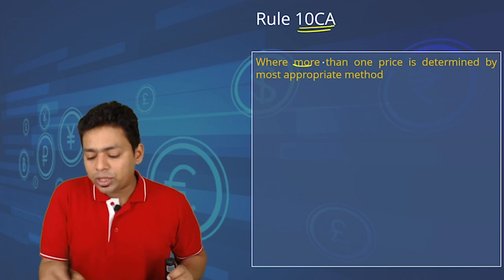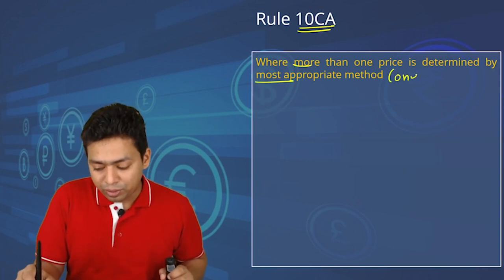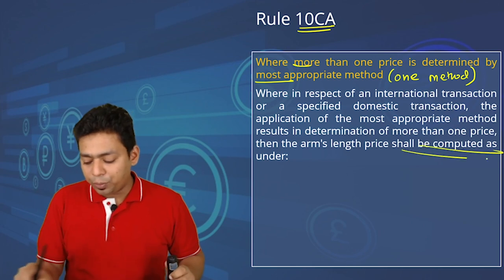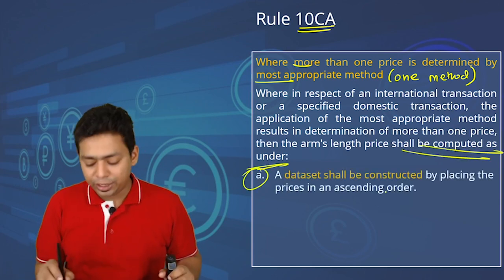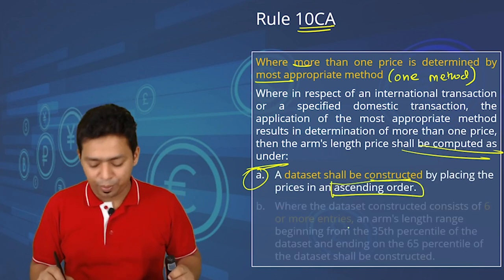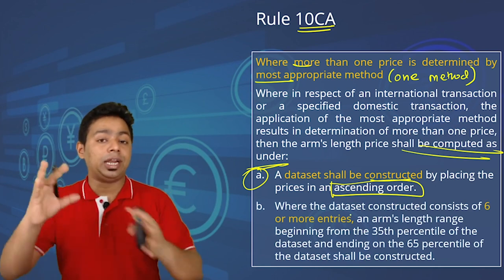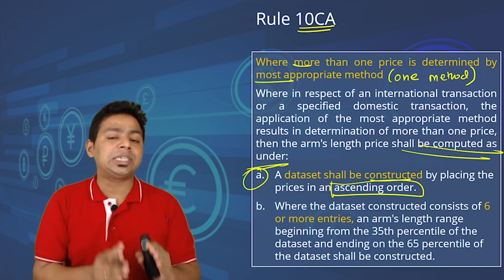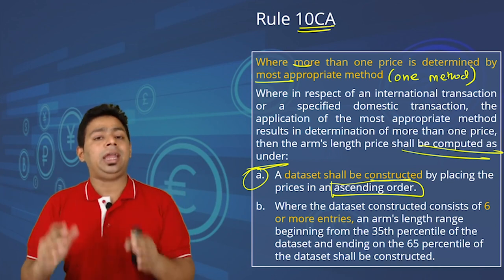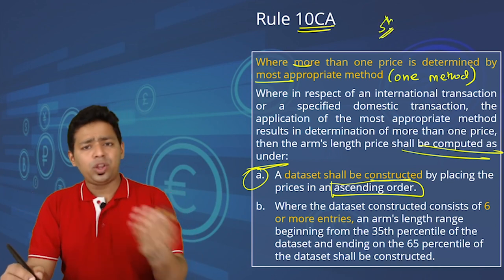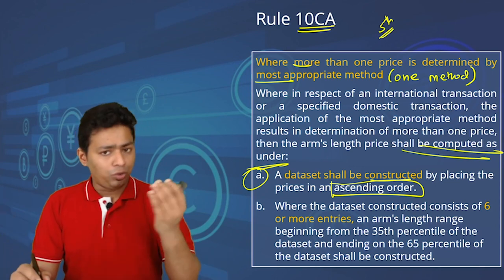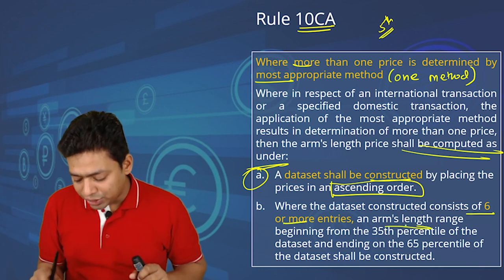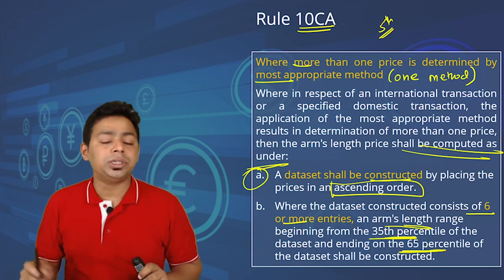Under Rule 10CA, when more than one price is determined by the most appropriate method — only one method, not multiple — we compute arm's length price as follows. First, arrange the entire data set in ascending order. Then count the total number of samples. If the count is up to 5, simply take the arithmetic mean. If it is 6 or more, apply the lower range at the 35th percentile and the upper range at the 65th percentile.